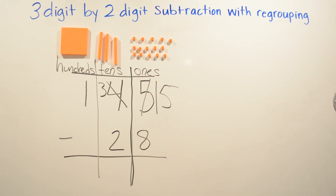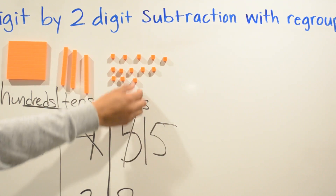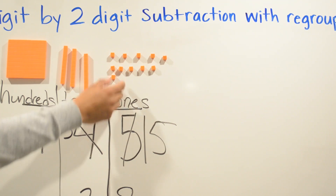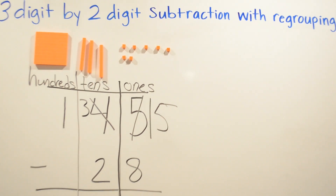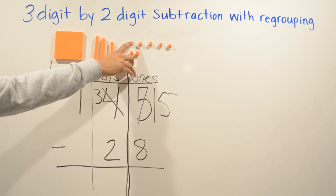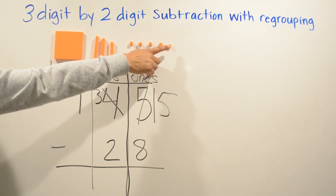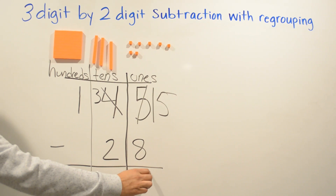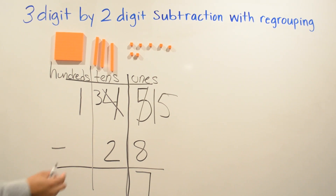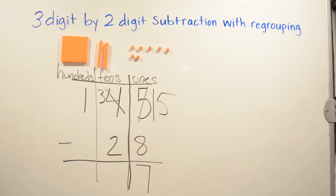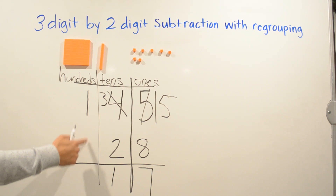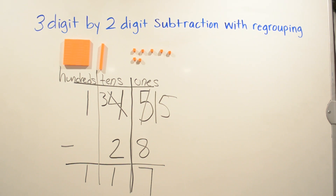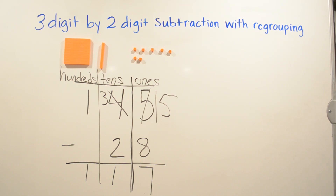Now that we have that, we're going to subtract — eight from fifteen, so we're going to take away eight: one, two, three, four, five, six, seven, eight. Now we're going to count how many we have left: one, two, three, four, five, six, seven. Now we have three minus two — let's take away two from the tens place. Now we're going to have one. We can say zero here, so one minus zero is one. So your difference is going to be 117.